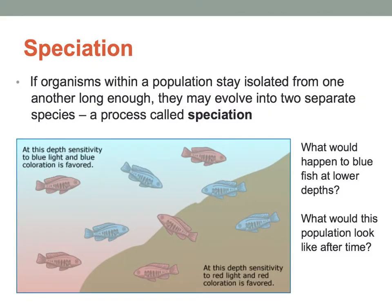Speciation is the process that basically creates new species — how they evolve from a common ancestor. In order for speciation to take place, there has to be some type of isolation where populations are separated from one another.